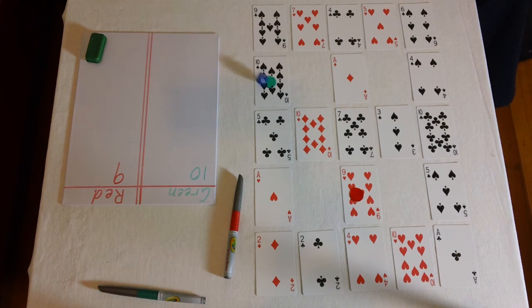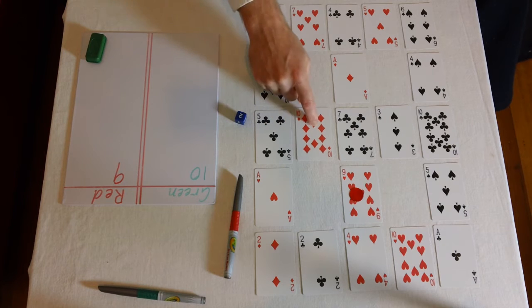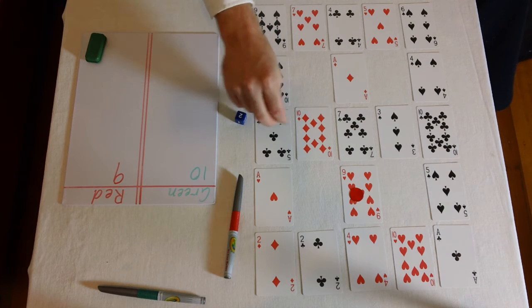Now it's green's turn again. And this time green rolls a two. I'm going to go one, two because I can land on a ten.